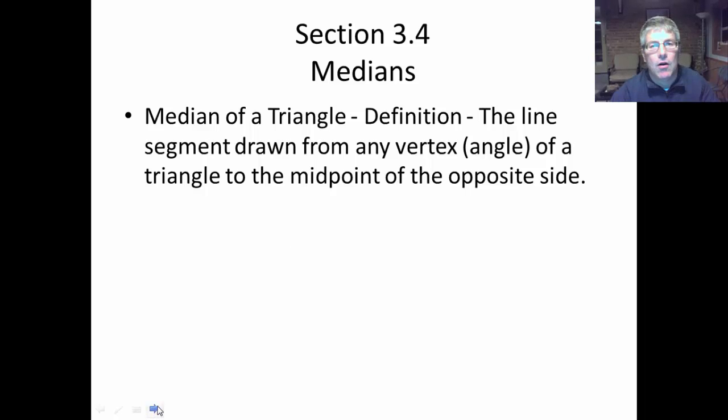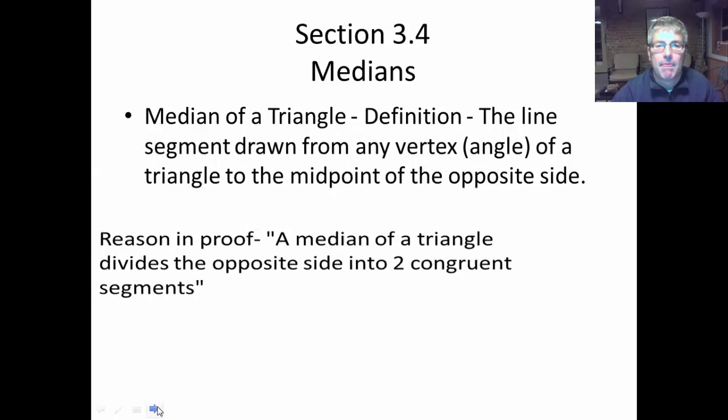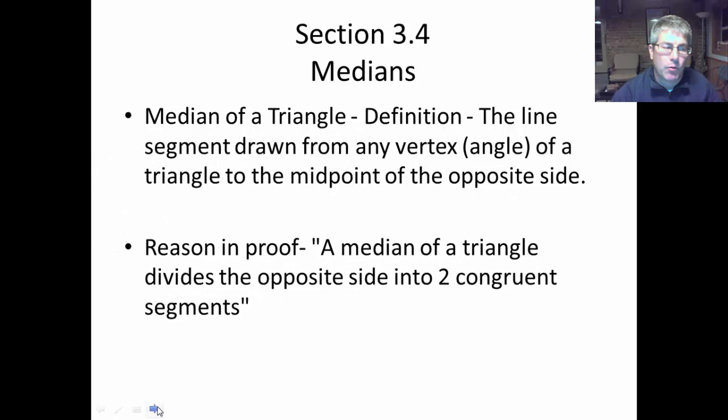Whereas an altitude all that does is form a right angle with the opposite side. So our reason in a proof would be something like this: A median of a triangle divides the opposite side into two congruent segments.